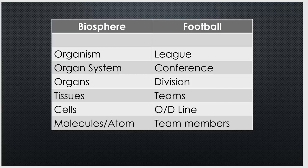Let's go back to that human. That human had organ systems, and you could break each organ system down into different organs. So my digestive system might be made up of my tongue, my esophagus, my stomach, and my intestines — those are different organs that are part of the organ system. The same way our conferences were broken down into different divisions.